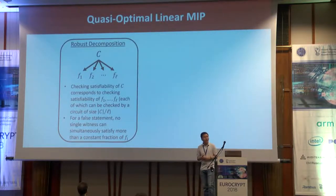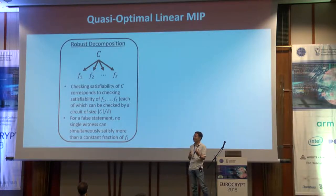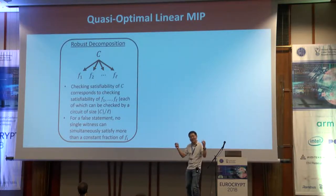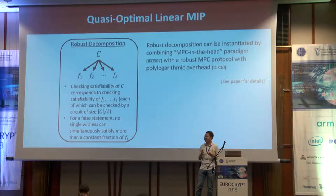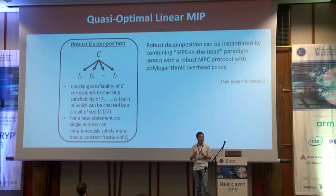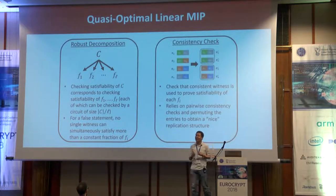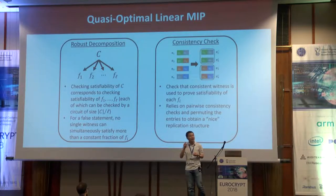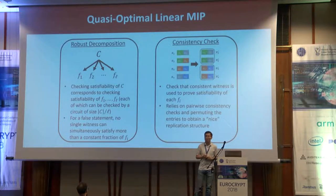To recap: the way we build a quasi-optimal linear MIP is to begin with a robust decomposition mechanism that takes a large circuit C and instead of checking satisfiability of the big circuit, checks satisfiability of all the different constraint functions. In the paper, we show how to instantiate this primitive using MPC-in-the-head combined with a very efficient MPC protocol. The second ingredient is the consistency check mechanism that forces the prover to use a consistent set of witnesses to argue satisfiability of each smaller constraint function. Together, we obtain a quasi-optimal linear MIP.